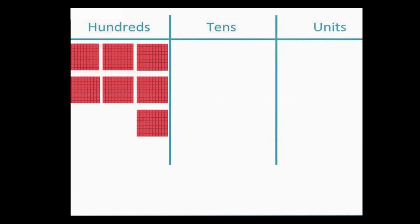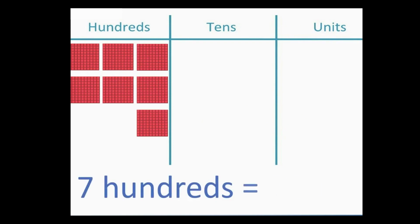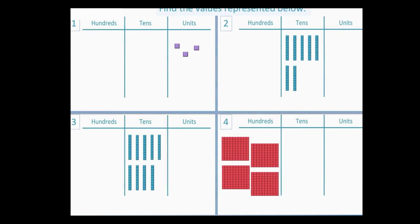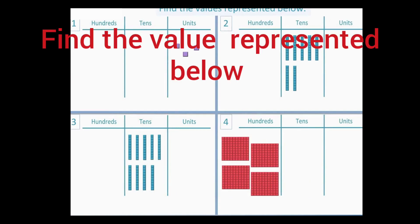Here we have one, two, three, four, five, six, and seven grids of 100, which is 700. Here we have some questions — please try them. We have already solved them for your convenience as well. Find the values represented below.